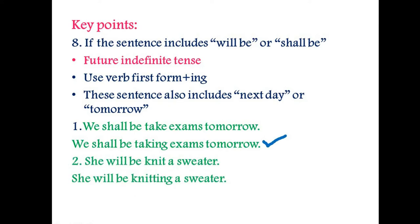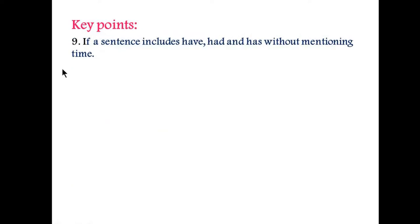The next example is: 'We will be knit a sweater' — this is incorrect. The correct form is 'She will be knitting a sweater.' You are using here the verb first form plus '-ing'.